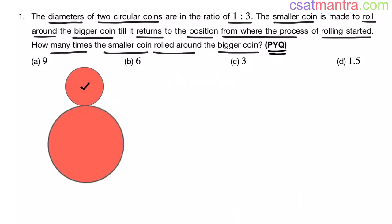This is the smaller coin. This is bigger coin. Now the smaller coin is made to roll around the bigger coin. This is the starting point. It is rolling. It will again come back to this position. Now how many times this smaller coin rolled around the bigger coin? In this process, this smaller coin will cover perimeter of bigger coin. It will travel from here to here. This is the perimeter of bigger coin.